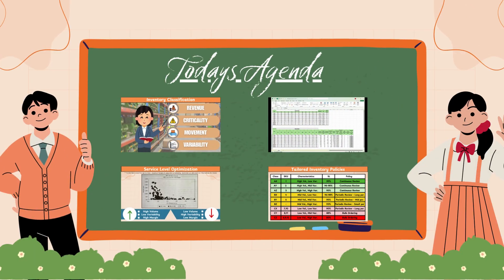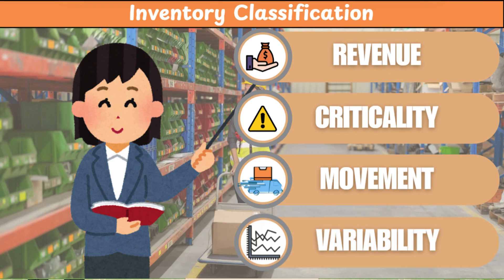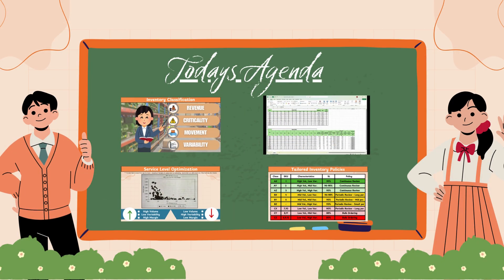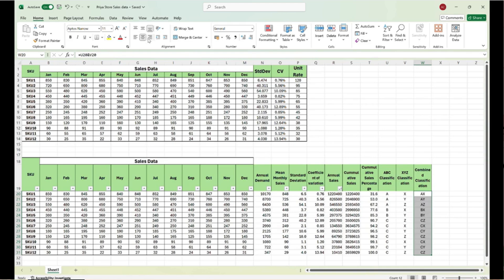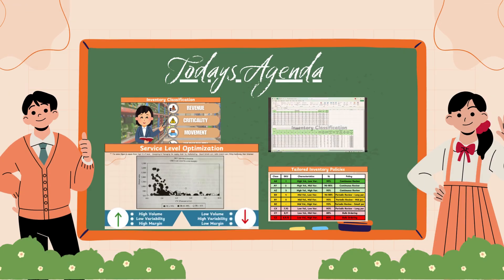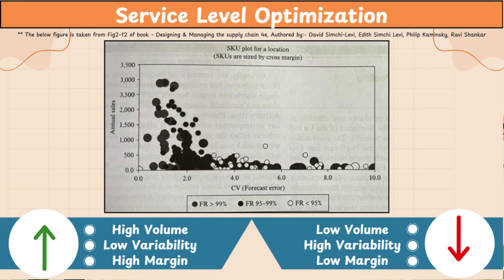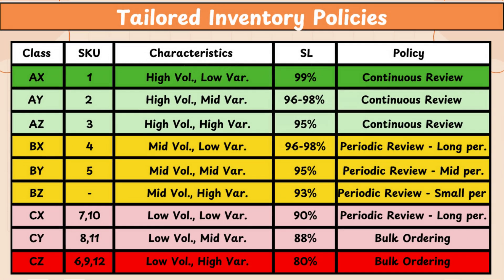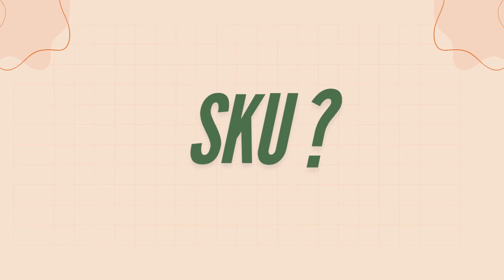In this video, we will explain all these questions in four different parts. First, we will understand the different types of inventory classifications. The second part is a case study on how to implement ABC XYZ classification for Priya store. Third, we will understand how to set an optimized service level. And finally, we will create a tailored inventory policy for each category. Let's get started.